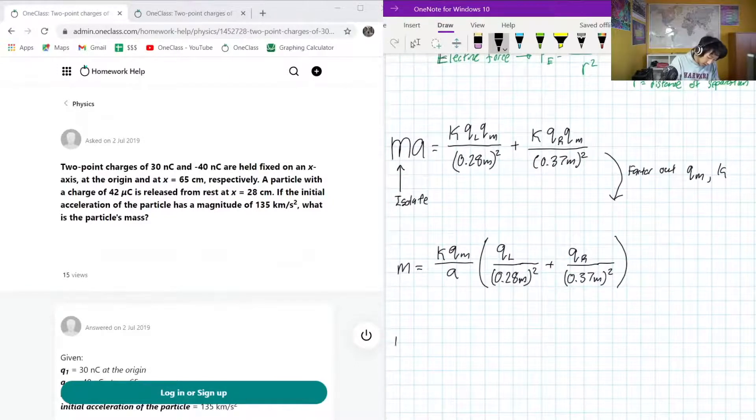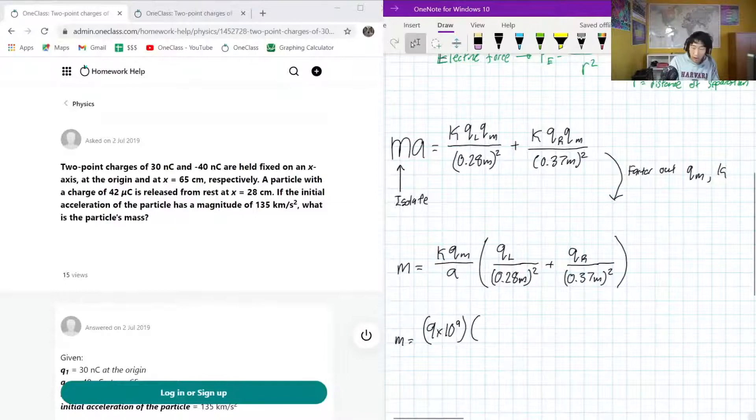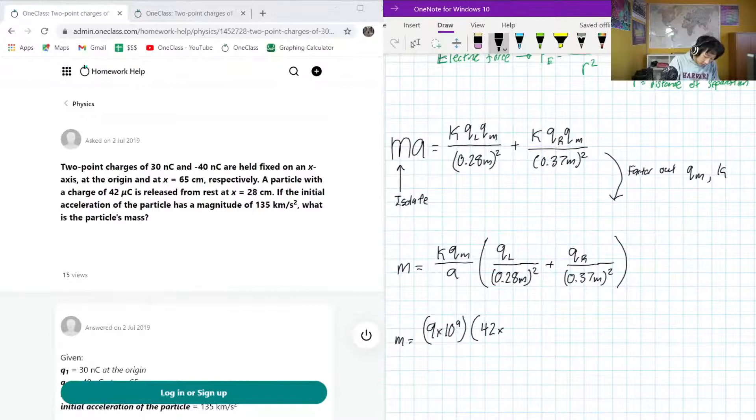And then, here, we're going to have QL over 0.28 meters squared, plus QR over 0.37 meters squared. Okay. So, subbing in the numbers, we get 9 times 10 to the 9. That's our K value. Our QM, so that's our middle charge. That's going to be 42 microcoulombs. 42 times 10 to the negative 6.